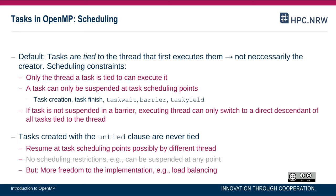There's one thread that encounters the pragma omp task construct. It creates a task and might execute it immediately or put it into a work queue. If the task is executed immediately, the creator thread is also the executor thread. If it's put into the work queue for deferred execution, the creator thread might later pick it up, or it could be a different thread. By default, tasks are tied.